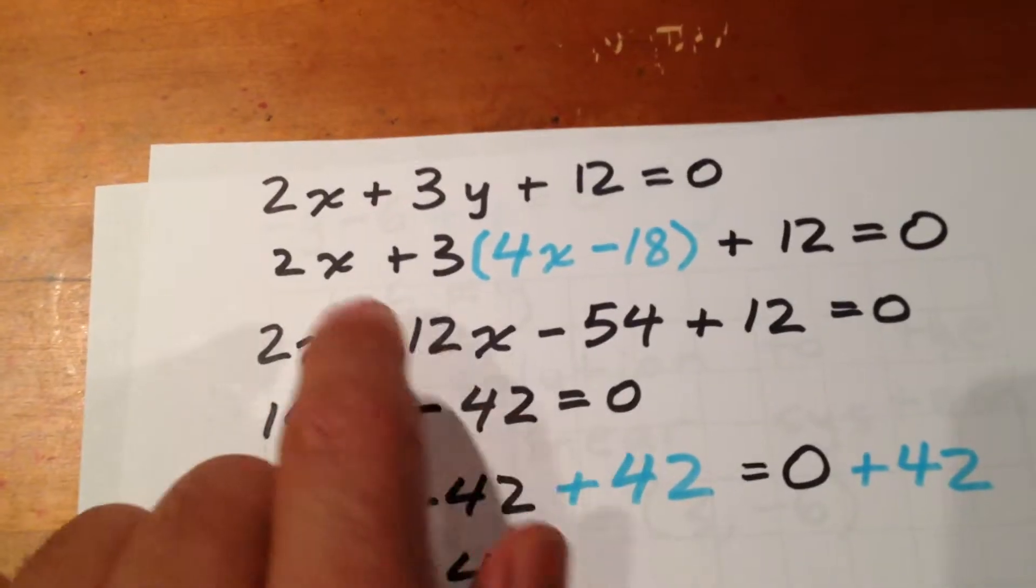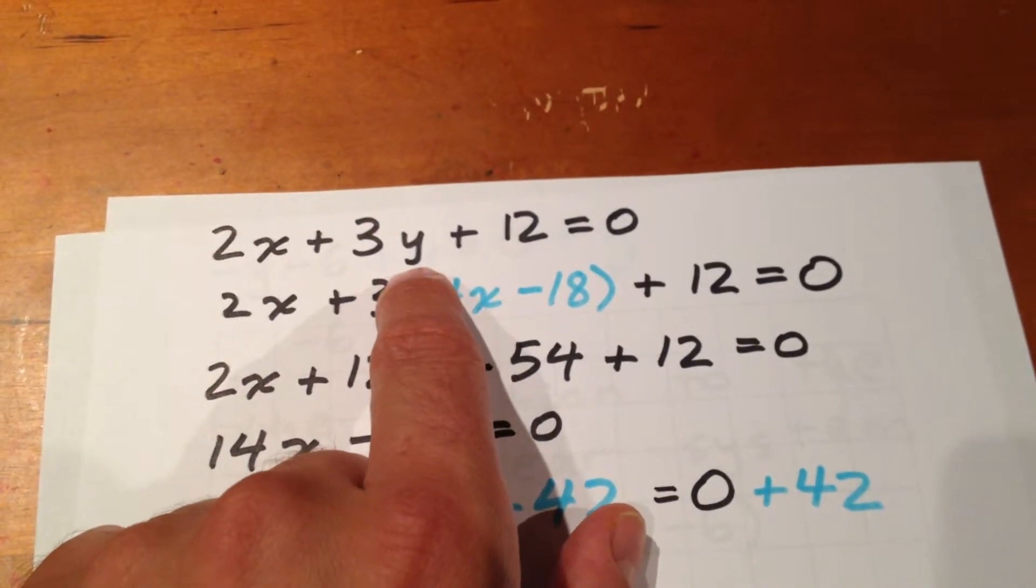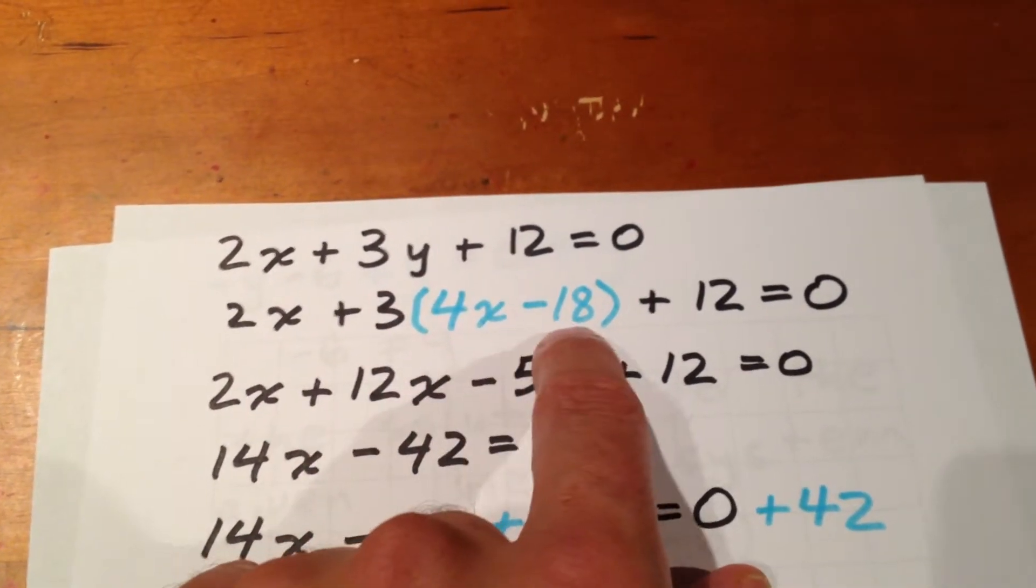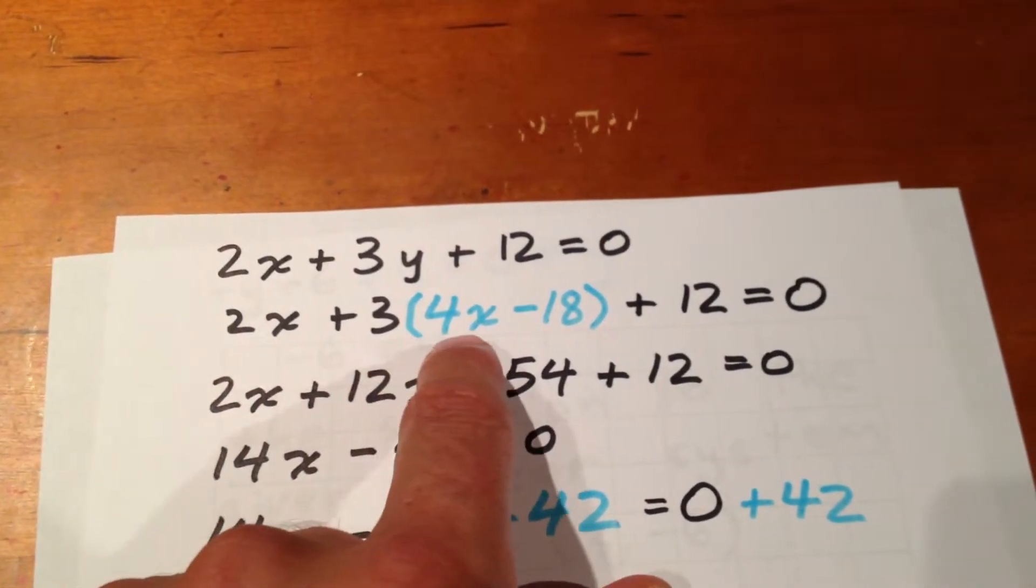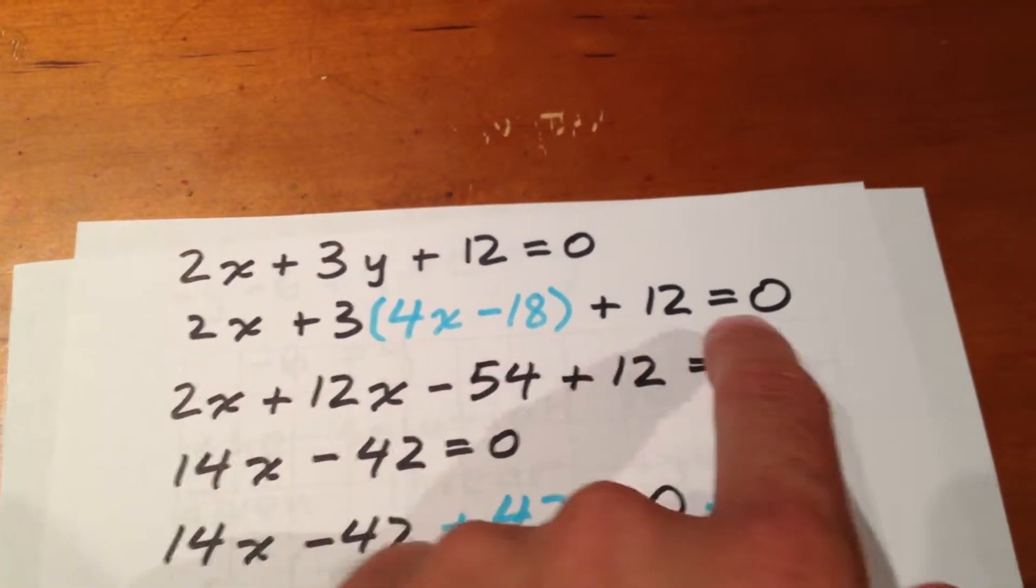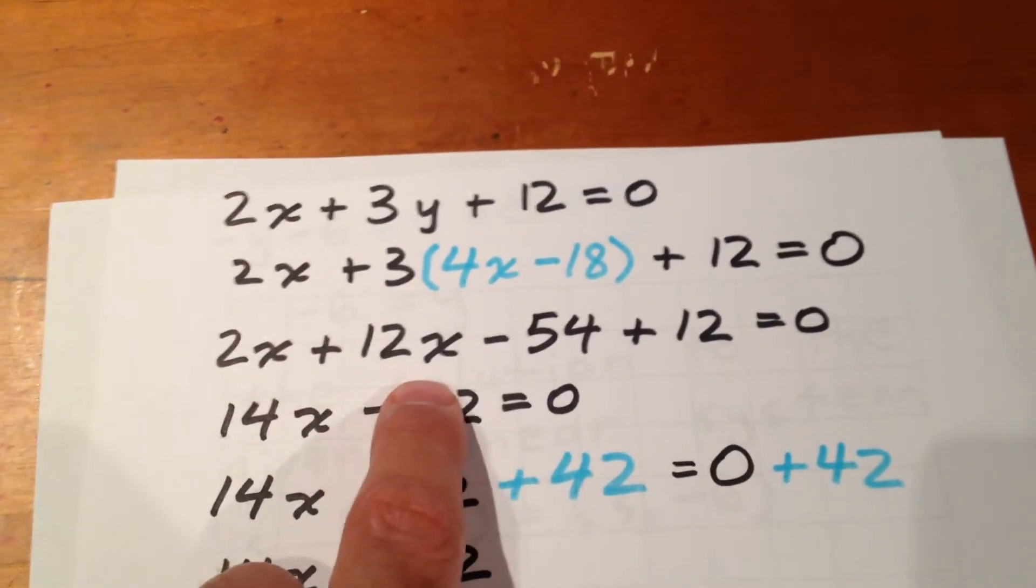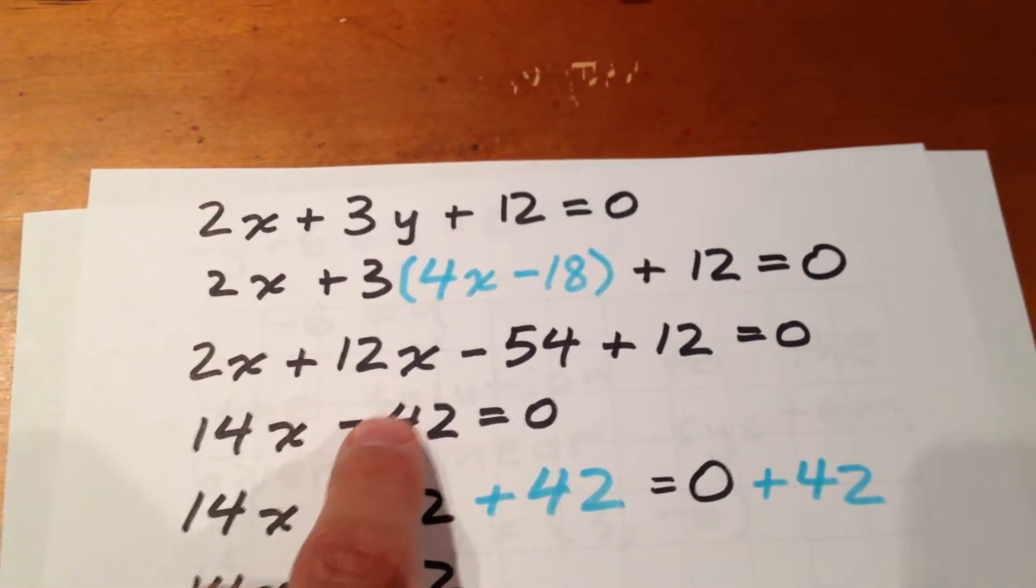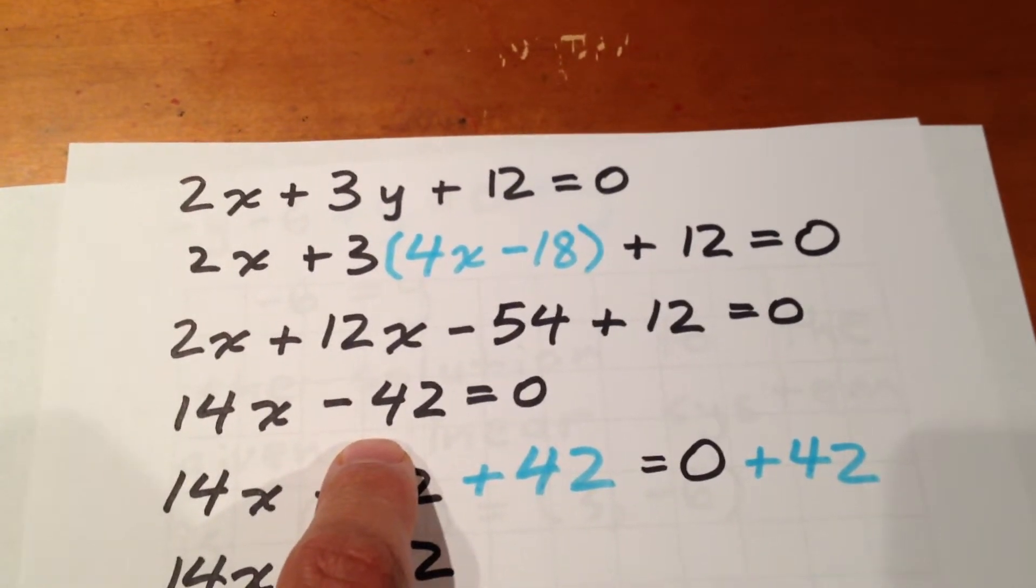The second equation reads 2x plus 3y plus 12 equals 0. But we just solved for y. y is equal to the expression 4x minus 18. So this means that 2x plus 3 times 4x minus 18 plus 12 equals 0. We distribute the 3 and we get 2x plus 12x minus 54 plus 12 equals 0. Which means 14x minus 42 equals 0.